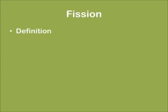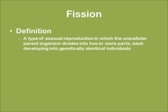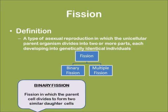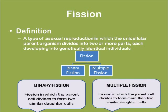Now let's start with fission. Fission is a type of asexual reproduction in which a unicellular parent organism divides into two or more parts, each developing into a genetically identical individual. The types of fission are: binary fission, in which two daughter cells are similar, and multiple fission, in which two or more than two similar daughter cells are formed.